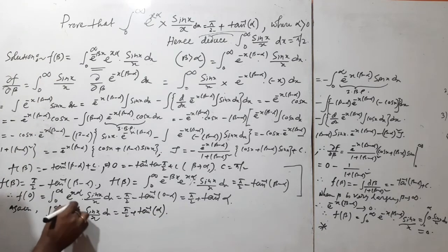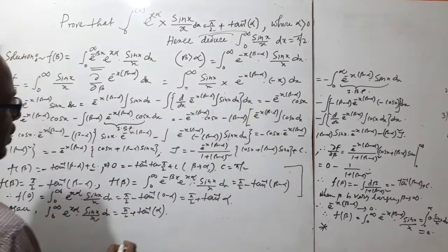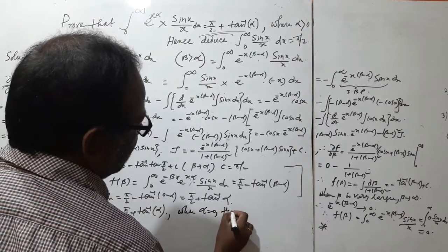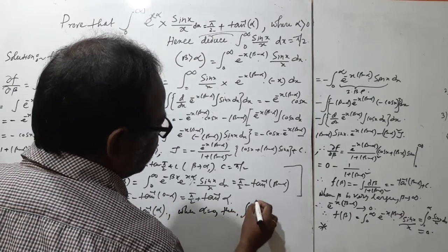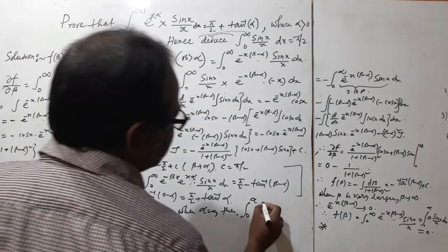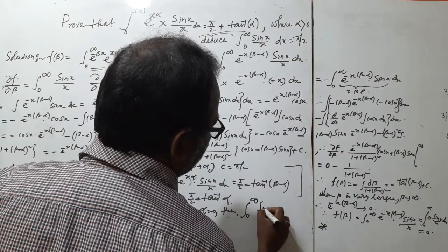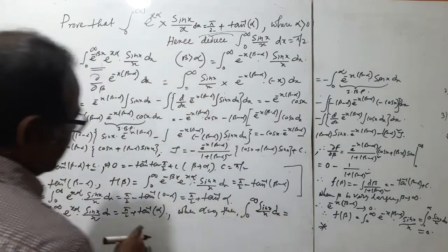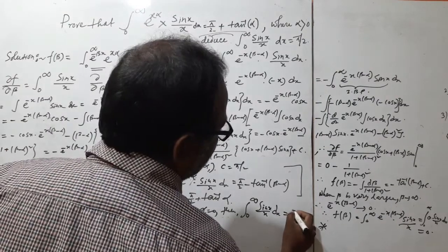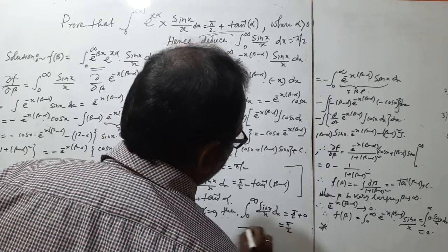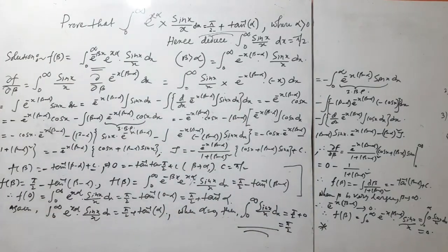Now to get our required value, we put α = 0. Then we get ∫₀^∞ sin(x)/x dx = π/2 + tan⁻¹(0) = π/2 + 0 = π/2. This is the required result. Thank you for watching — a very interesting question.